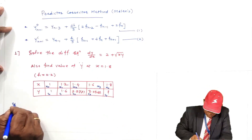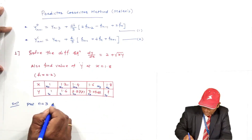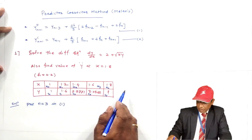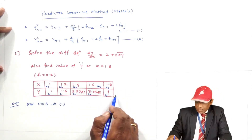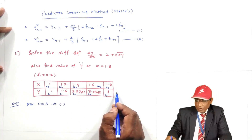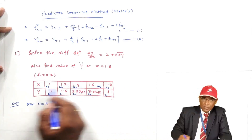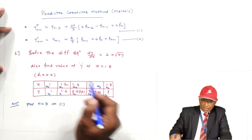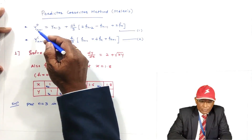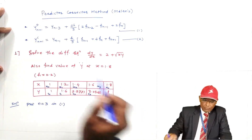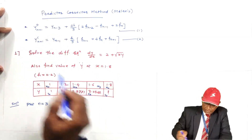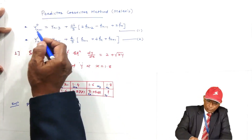Putting N = 3 in equation 1, we get Y4P. The equation becomes: Y4P = Y0 + (4h/3)[2f1 − f2 + 2f3]. If Y5 were required we would put N = 4; for Y6 we put N = 5. Here we want Y4, so we put N = 3.